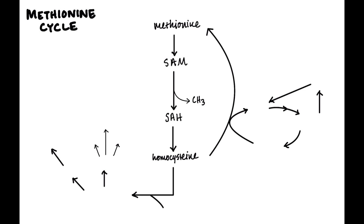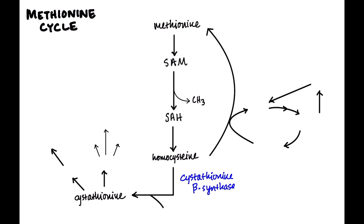Homocysteine can get converted into something called cystathionine. The enzyme that does this is called cystathionine beta synthase, abbreviated CBS. It uses the cofactor B6, pyridoxine. That's how we get rid of homocysteine going forward.